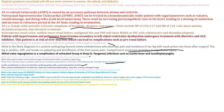The ejection fraction in a patient with heart failure secondary to myocarditis would be reduced — dilated cardiomyopathy with reduced systolic heart failure. Features of severe aortic stenosis include a late-peaking systolic murmur and soft second heart sound. The preferred initial diagnostic test for fibromuscular dysplasia is non-invasive imaging — CT angiography or duplex ultrasound.